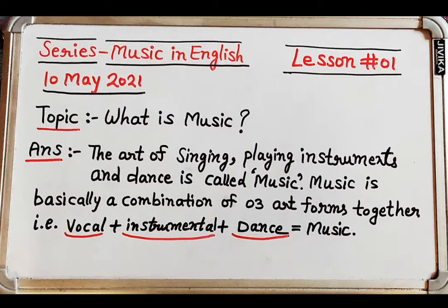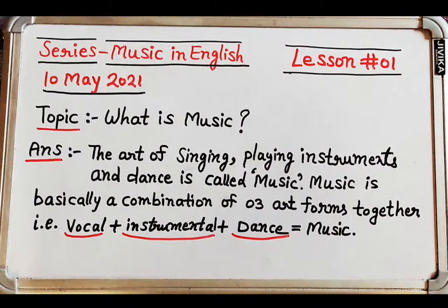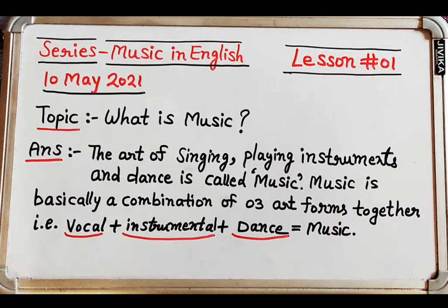Today's topic is a basic one, and I am going to start with: what is music? The answer is very simple. As you can read right now on your screen, as I have written, the art of singing, playing instruments, and dance is called music. Music is basically a combination of three art forms together — vocal plus instrumental plus dance equals music.